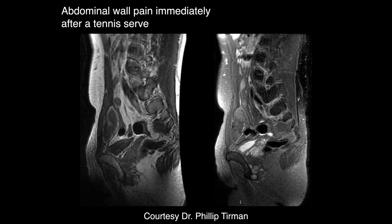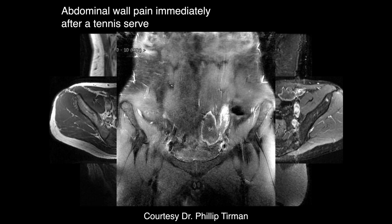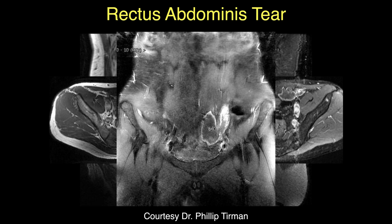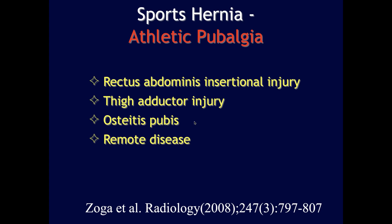A case of abdominal wall pain after a tennis serve. There is a circumscribed collection deep along the rectus abdominis, consistent with a large hematoma from a significant abdominal wall tear. This leads into the topic of sports hernias — better termed athletic pubalgia — which are acute or chronic injuries near the symphysis pubis involving the distal rectus abdominis insertion.